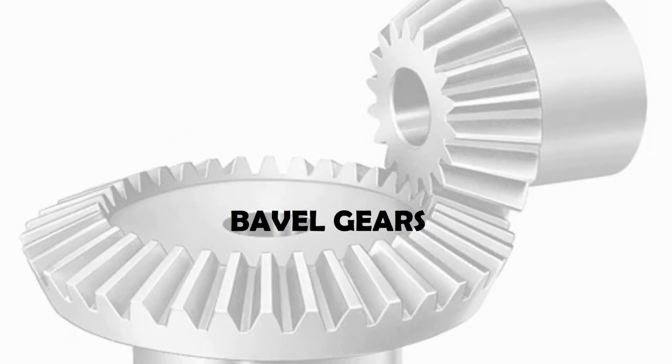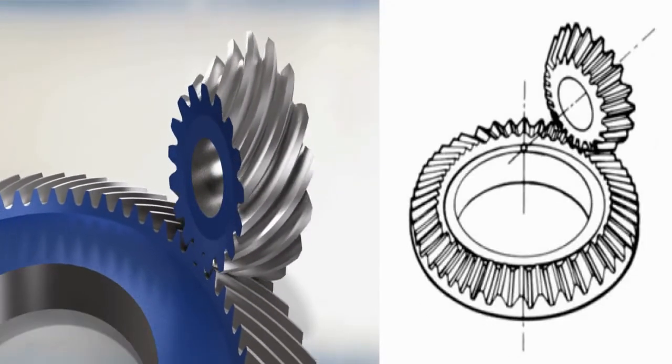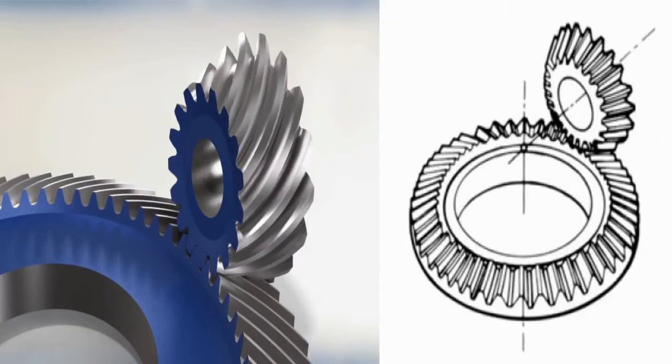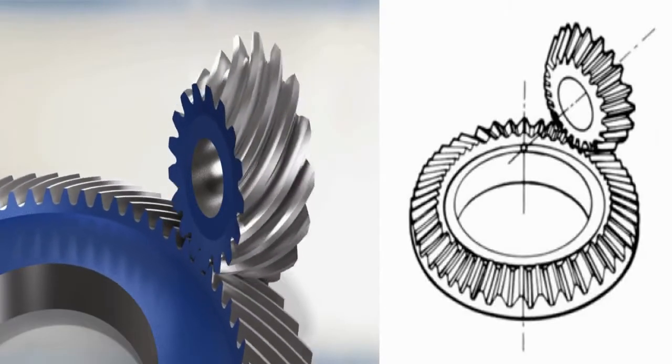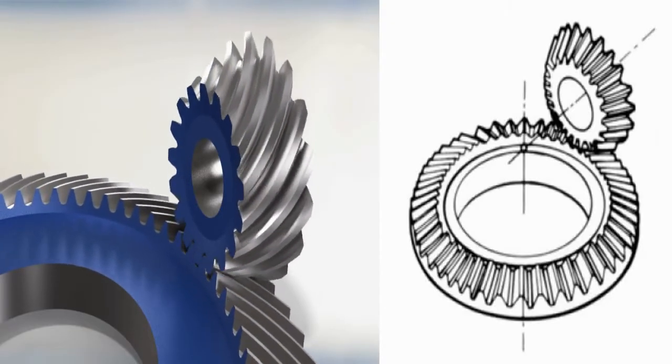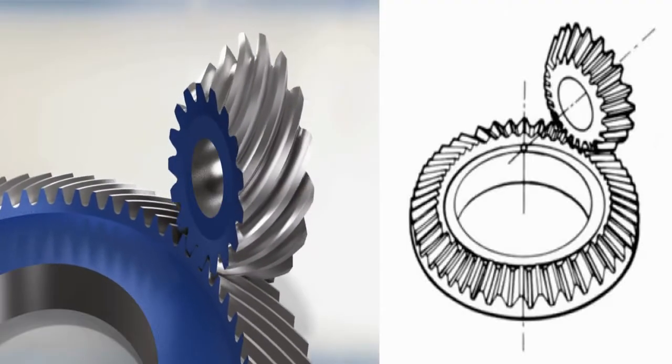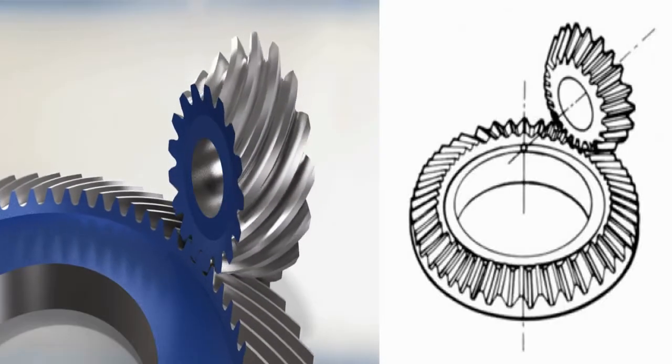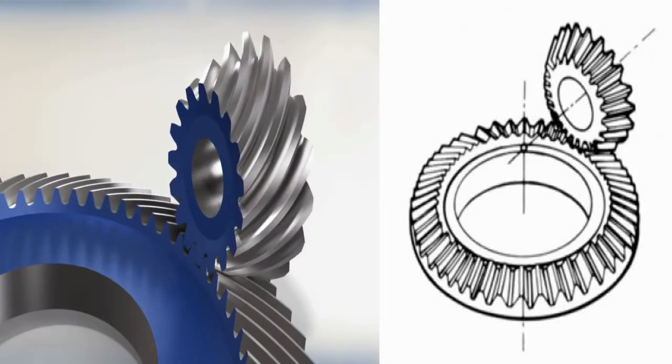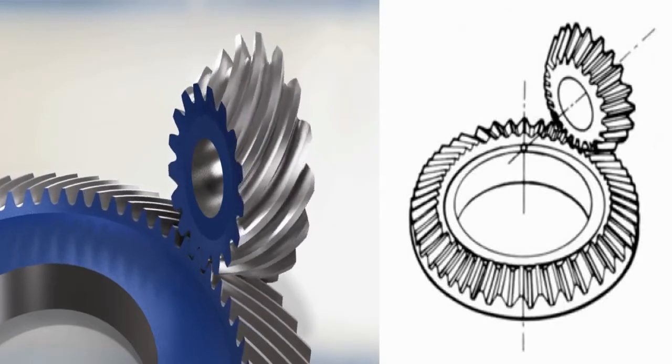Bevel gear. Bevel gears are gears where the axes of the two shafts intersect and the tooth-bearing faces of the gears themselves are conically shaped. Bevel gears are most often mounted on shafts that are 90 degrees apart but can be designed to work at other angles as well. The bevel gear has many diverse applications such as locomotives, marine applications, automobiles, printing presses, cooling towers, power plants, and steel plants.